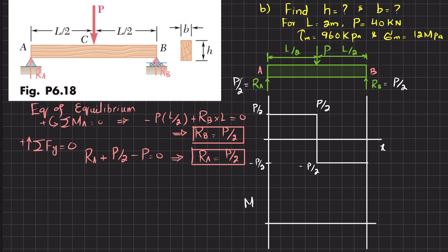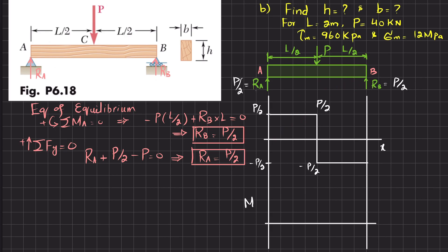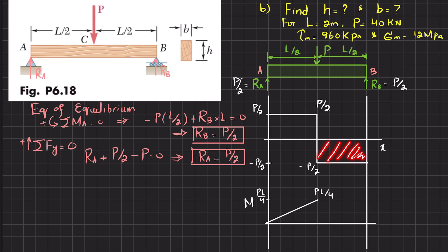Drawing the bending moment diagram: the rectangular area under the shear force diagram from A to C equals P/2 × L/2 = PL/4. Since the shear force is a constant horizontal line, the bending moment increases linearly (one degree higher) to a maximum of PL/4 at point C. The area from C to B is -PL/4, bringing the bending moment back to zero.